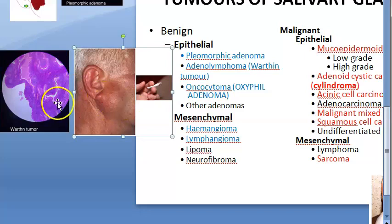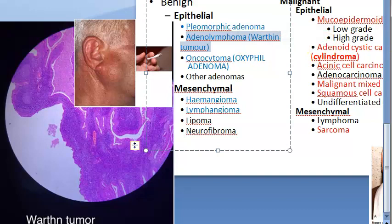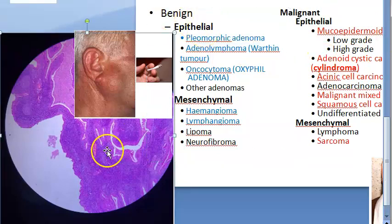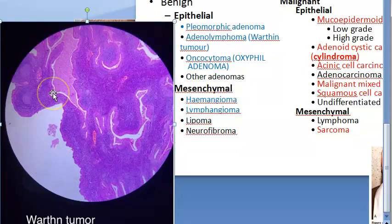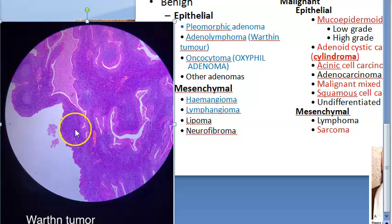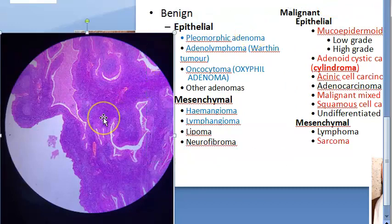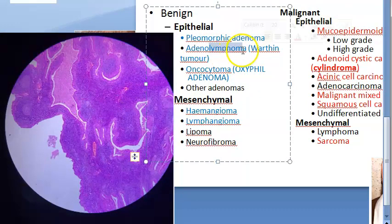Warthin's tumor, also called adeno lymphoma or lymphomatous papillary adenoma, is also a benign epithelial condition. Histologically it looks very purplish — that's why it is called adeno lymphoma. You will see epithelial components but also lymphoid elements, which gives it that name. Treatment again is parotidectomy.